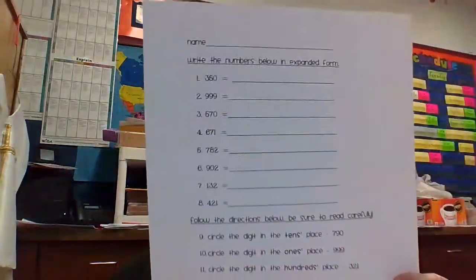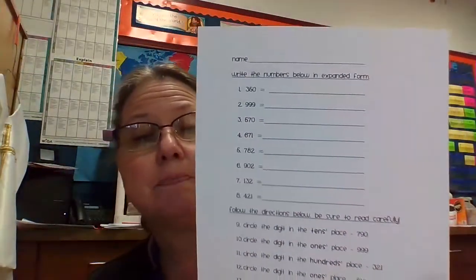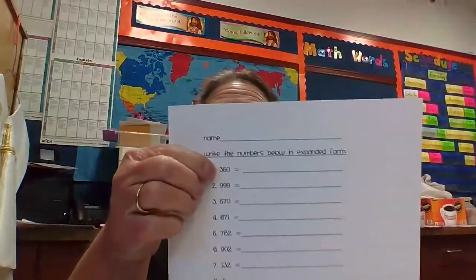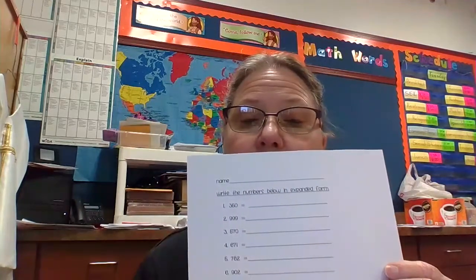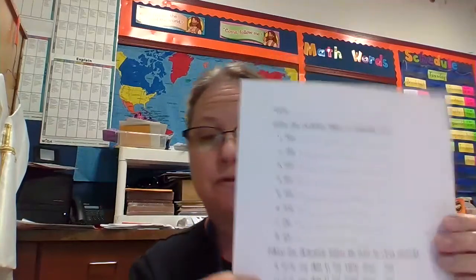Others have this page to do in expanded form. Some of you have this one. So you just need to look at it. The first one says 350, so you would write 300 plus 50 plus 0. Label. If you label them hundreds, tens, and ones, you'll be able to do this. Hundreds, tens, and ones. Label them and then write it in expanded form.